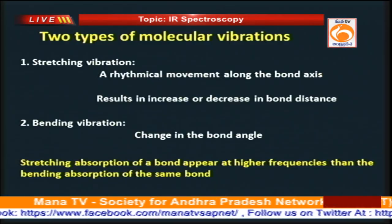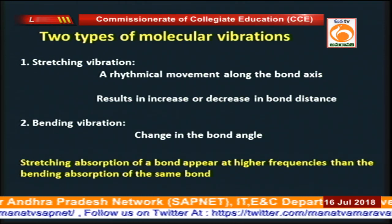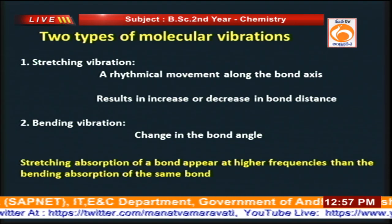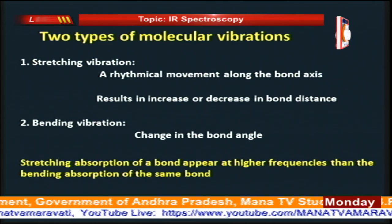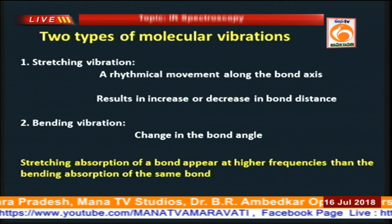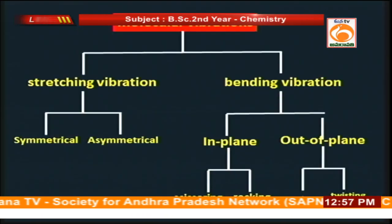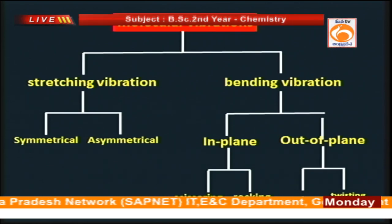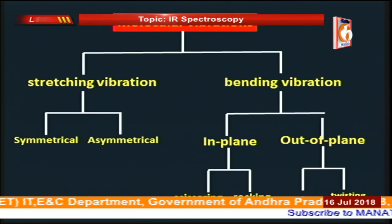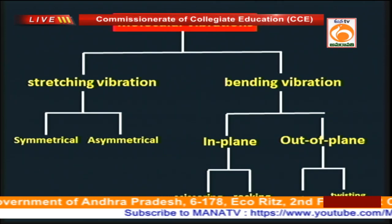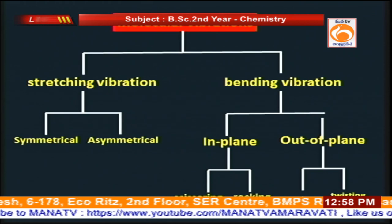There are two types of molecular vibrations: stretching and bending. Stretching vibration occurs due to rhythmical movement along the bond axis, causing a change in bond length. Bending vibration causes a change in bond angle. Stretching requires more energy than bending. Bending vibrations are classified into in-plane (scissoring and rocking) and out-of-plane (OOP — wagging and twisting). Stretching vibrations are classified into symmetrical and asymmetrical. In symmetrical stretching there is a uniform change; in asymmetrical stretching the variation is not the same in the two bonds. Wagging involves both bonds moving towards or away from the observer, while in twisting one bond moves towards and one moves away.